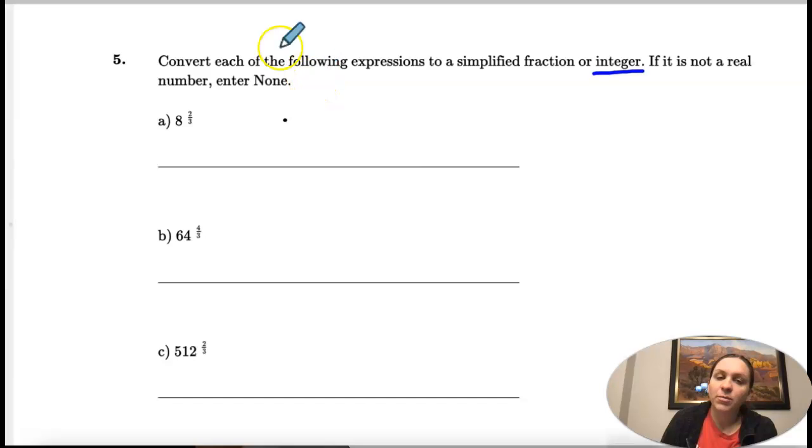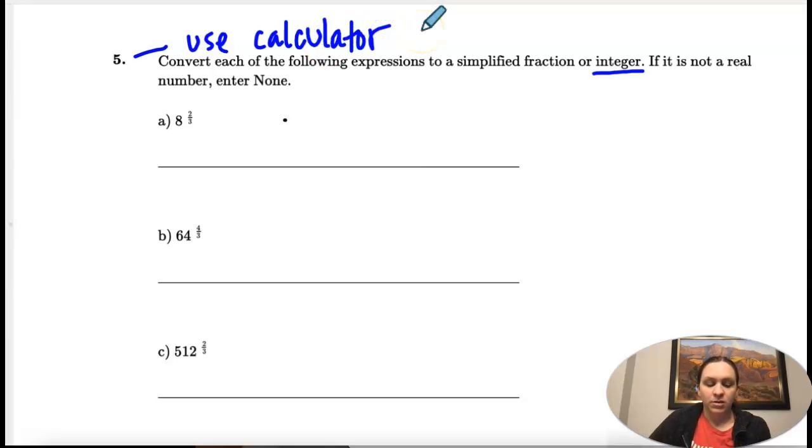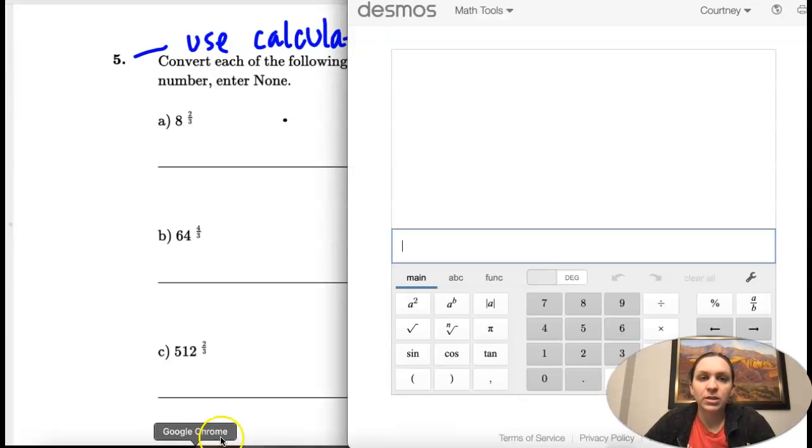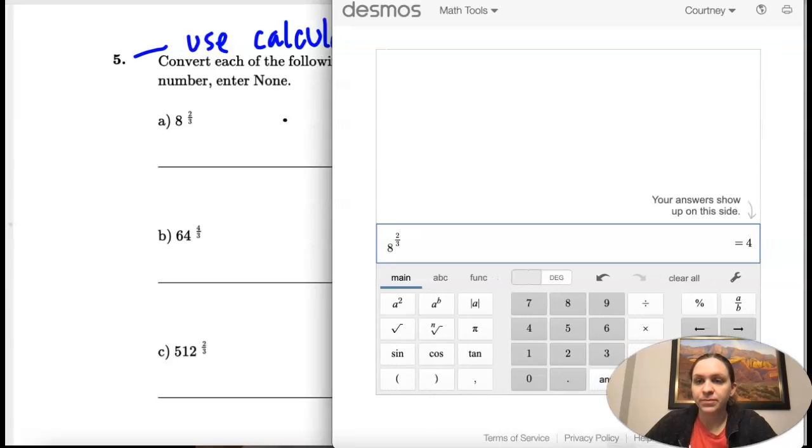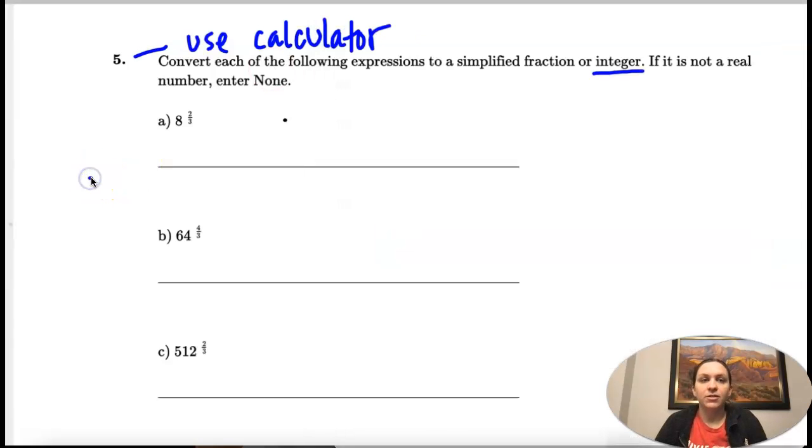So on number five, you can just use your calculator. You're going to type these in. So eight to the two-thirds, I'm going to open Desmos. Eight, here's my raise to the power, and then it's two divided by three, which is four. So that would be my answer.